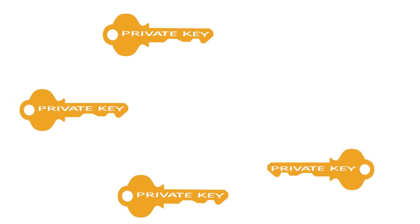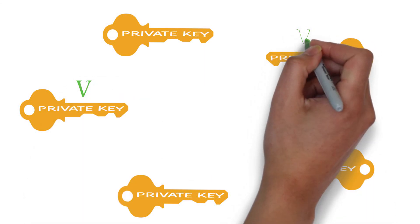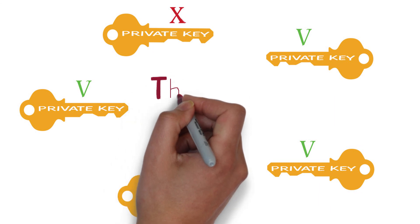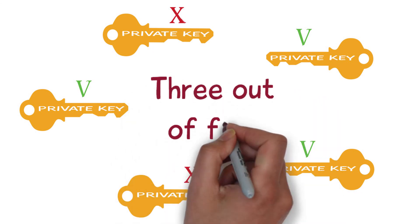Another distribution would be a three out of five. For example you have a board of five directors with each of them holding a key. At least three keys are needed in order to access the funds. Meaning that a majority of the group has to agree in order for a transaction to be executed. You can be creative with the ratios as you like.